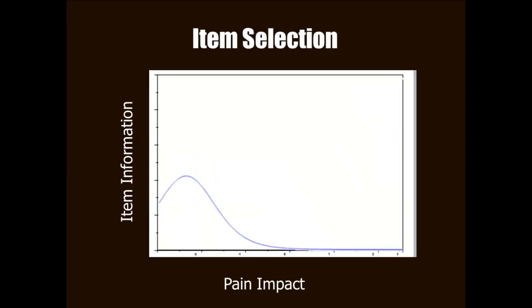Now let's return to a picture of item information. On this plot, the item information of two different items is shown. The information plot that's in blue there shows an item that provides a good bit of information at low levels of pain impact. The pink one provides good information at high levels of pain impact. Plots like this can be a lot of help to you when you're developing a scale.